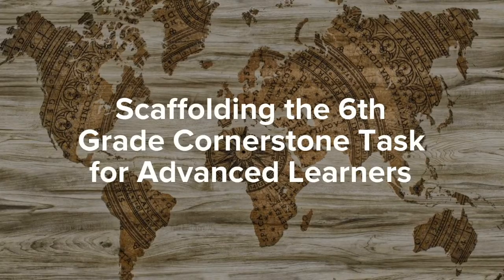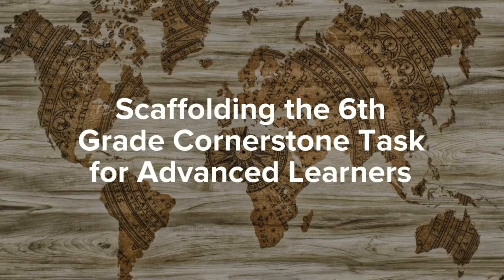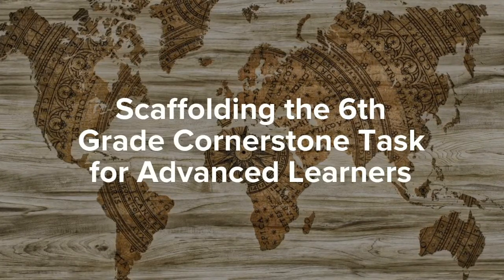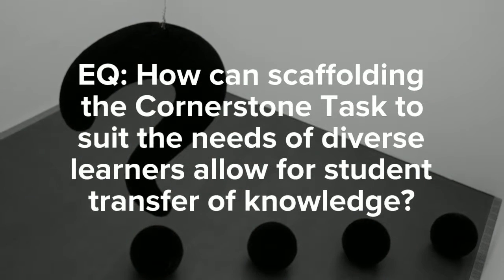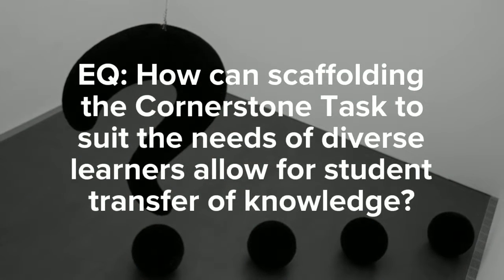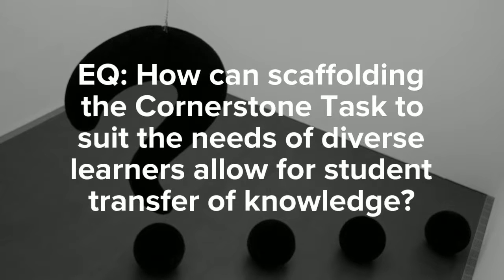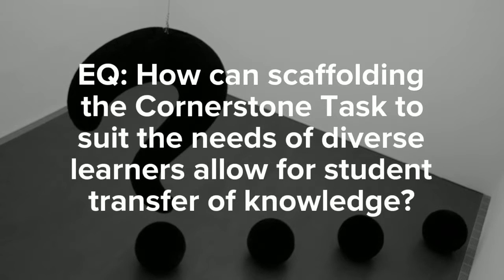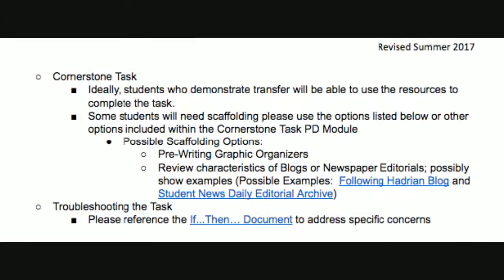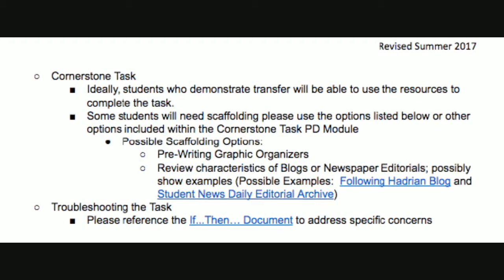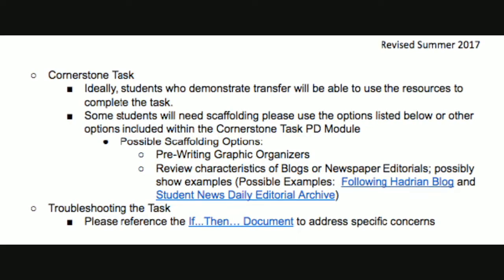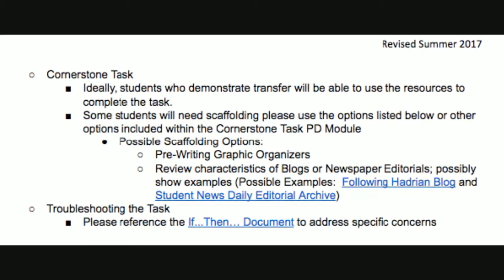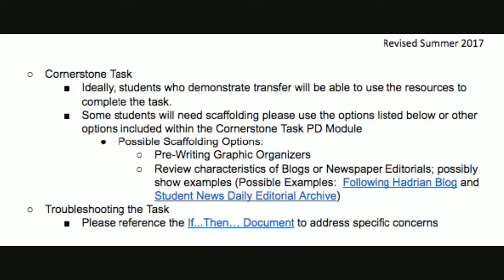In this module, you will learn about scaffolding the sixth grade social studies cornerstone task for advanced learners. The essential question for this module is: how can scaffolding the cornerstone task to suit the needs of diverse learners allow for student transfer of knowledge? The cornerstone task teacher's guide found in module 2B provides additional steps for students that may need more scaffolding to successfully demonstrate mastery of transfer.